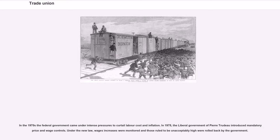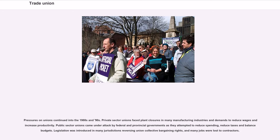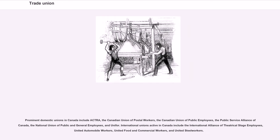The Canadian Labour Congress was founded in 1956 as the national trade union centre for Canada. In 1975, the Liberal government of Pierre Trudeau introduced mandatory price and wage controls, monitoring wage increases and rolling back those deemed unacceptably high. Pressures on unions continued into the 1980s and 1990s, with private sector unions facing plant closures and demands to reduce wages, while public sector unions came under attack from federal and provincial governments attempting to reduce spending and balance budgets. Prominent domestic unions in Canada include ACTRA, the Canadian Union of Postal Workers, the Canadian Union of Public Employees, the Public Service Alliance of Canada, and UNIFOR.